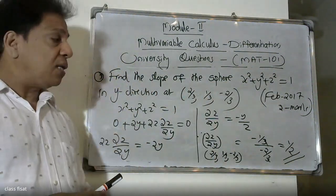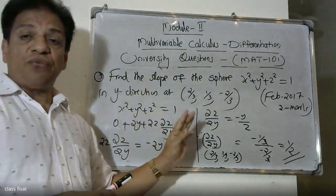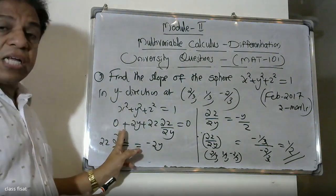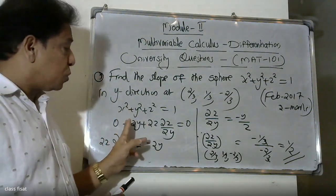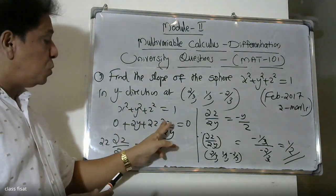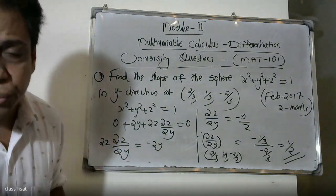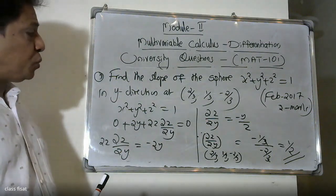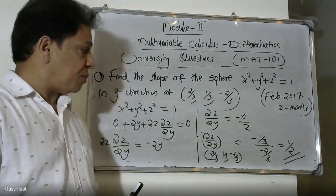For the sphere x-squared plus y-squared plus z-squared equals 1 in the y-direction, partially differentiating: x-squared gives 0, y-squared gives 2y, z-squared gives 2z times dou z by dou y equals 0. So dou z by dou y equals minus y by z, and substituting gives the final answer of 1/2.